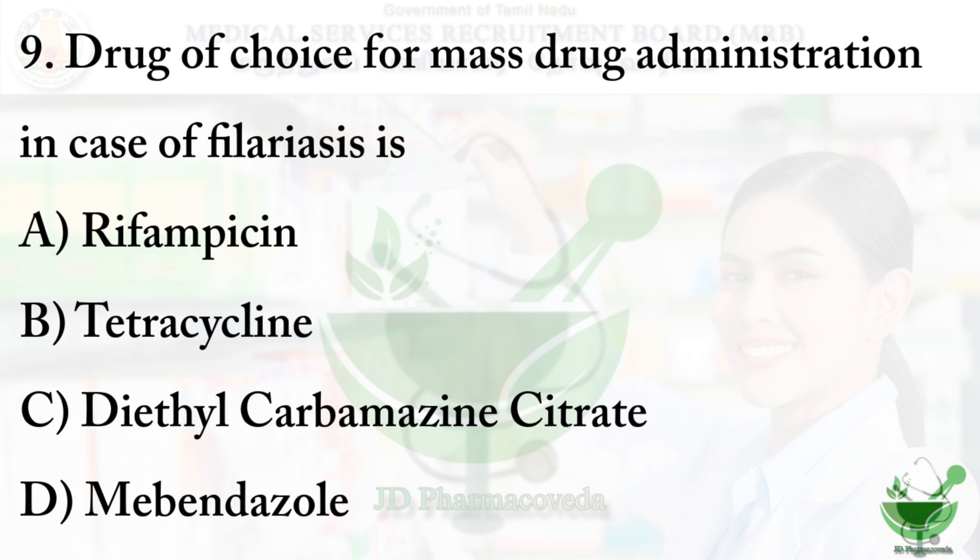Question number nine: the drug of choice for mass drug administration in case of filariasis is — option A: rifampicin, option B: tetracycline, option C: diethylcarbamazine citrate (DEC), option D: mebendazole. The correct option is option C, diethylcarbamazine citrate.